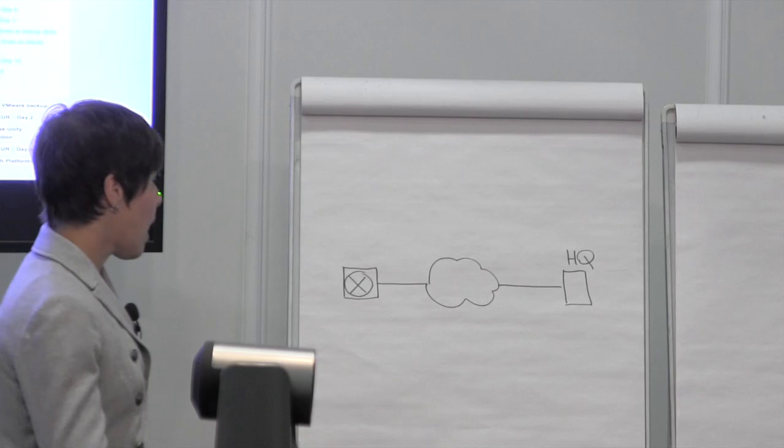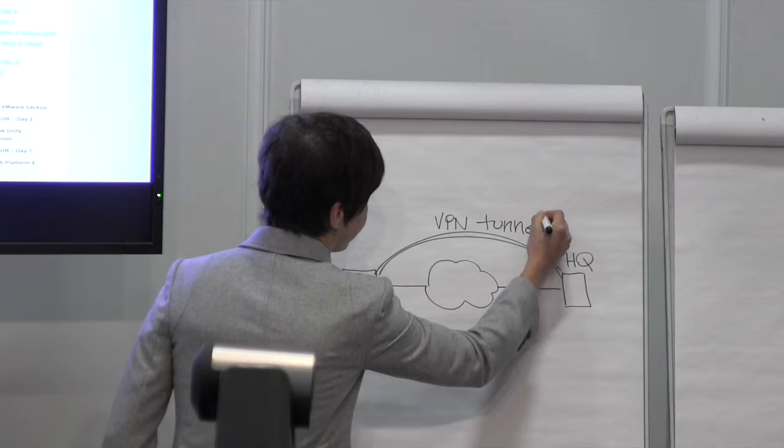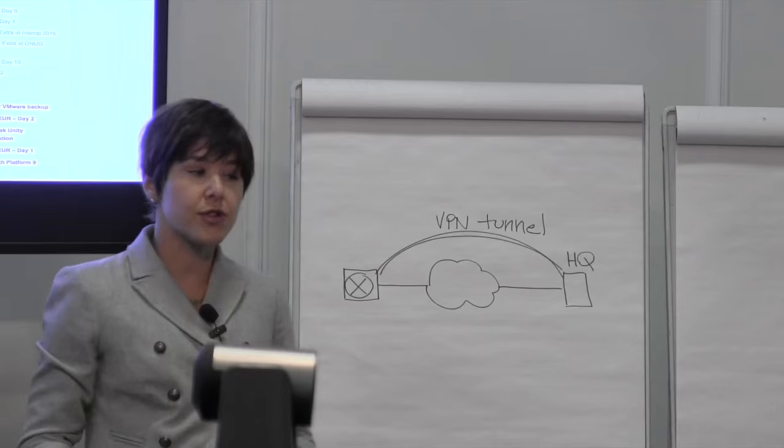Traditionally, all the branch traffic is backhauled to the headquarter and secured through a VPN tunnel. However, the branch is undergoing a transformation today. There are a lot of new trends that are affecting the way the branch looks like.